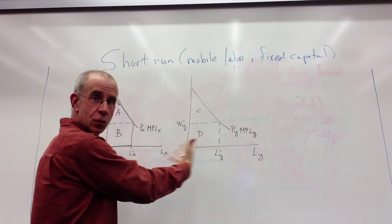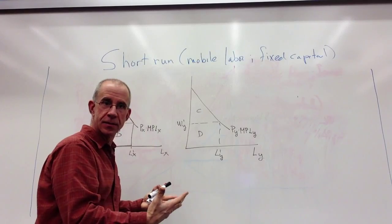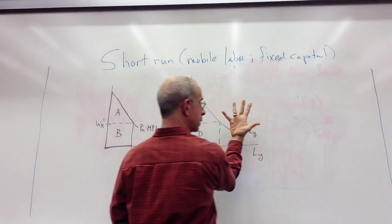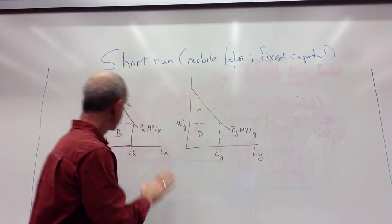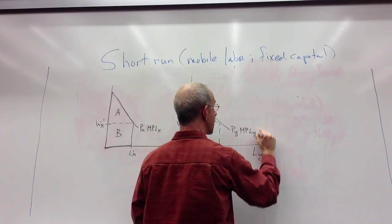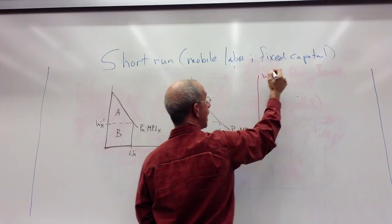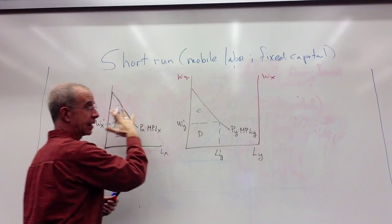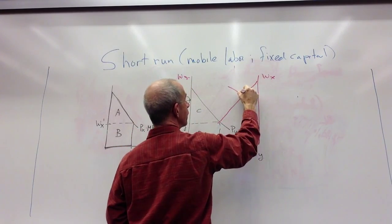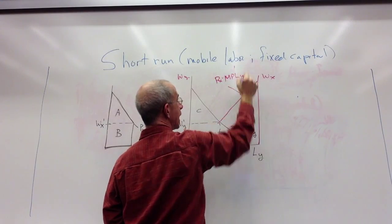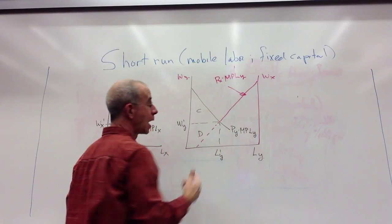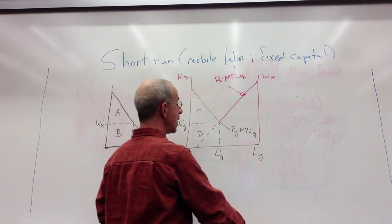Now what I want to do is to combine these two graphs together so we can analyze them at the same time. I'm going to take this and simply put it over on this graph, just imagine it coming out of the board, coming over and depicted over here. So this is the wage in X, this is the wage in Y. And I've got the price of X times the marginal productivity of labor in X given by this curve. That allows me to analyze these two things together.